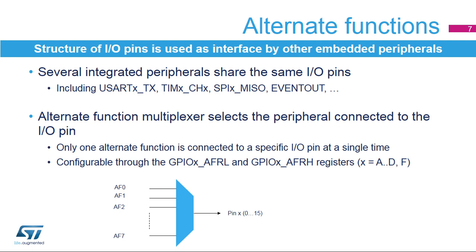Several integrated peripherals such as the USART, timers, SPI, and others share the same I/O pins in order to interface with the external environment. Peripherals are configured through an alternate function multiplexer, which ensures that only one peripheral is connected to the I/O pin at a single time. This selection can be changed during runtime of the application through the GPIO X AFRL and AFRH registers.